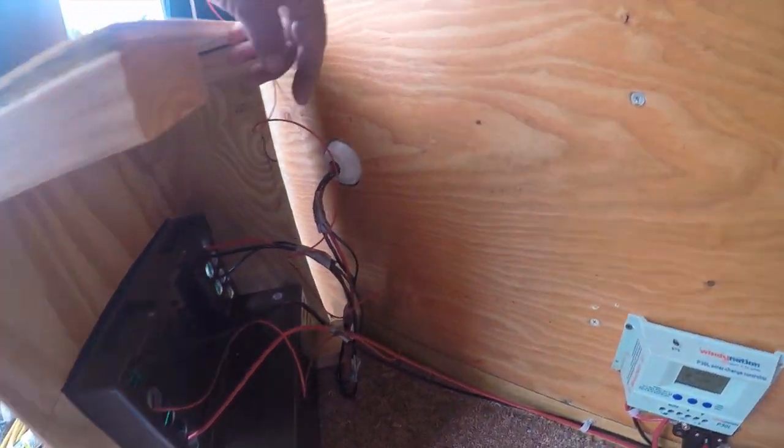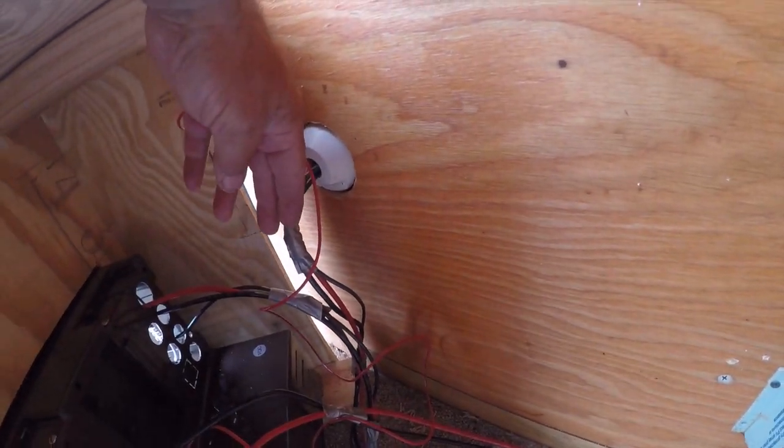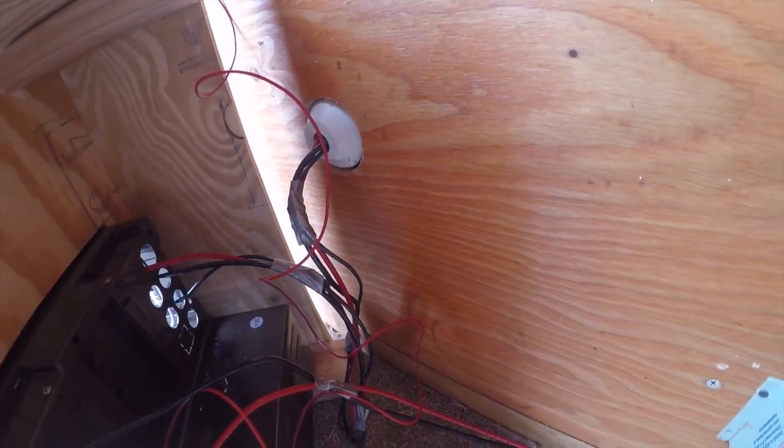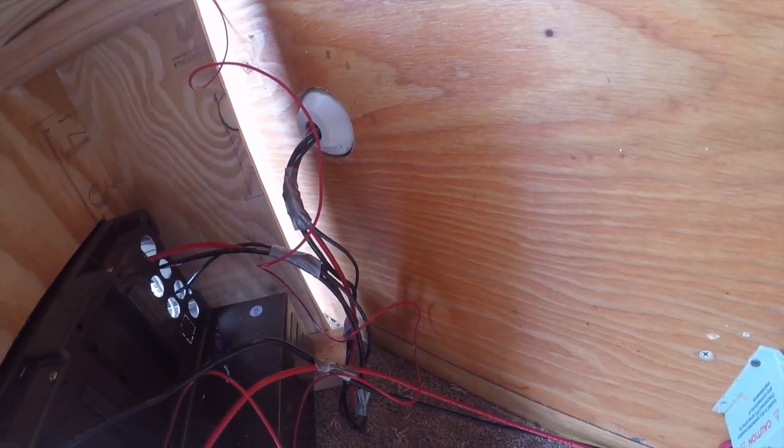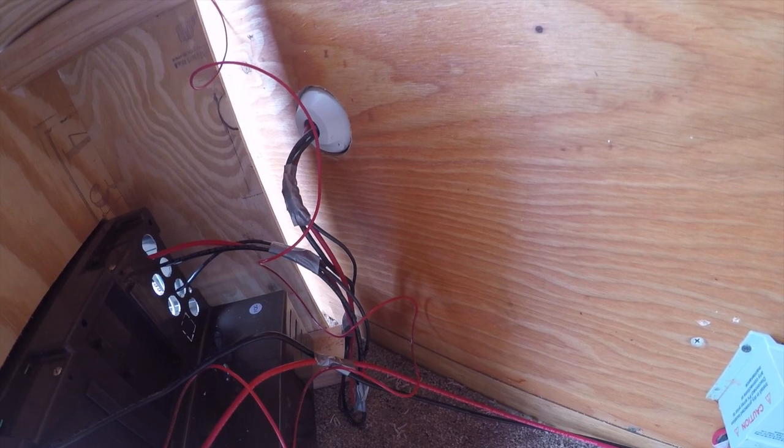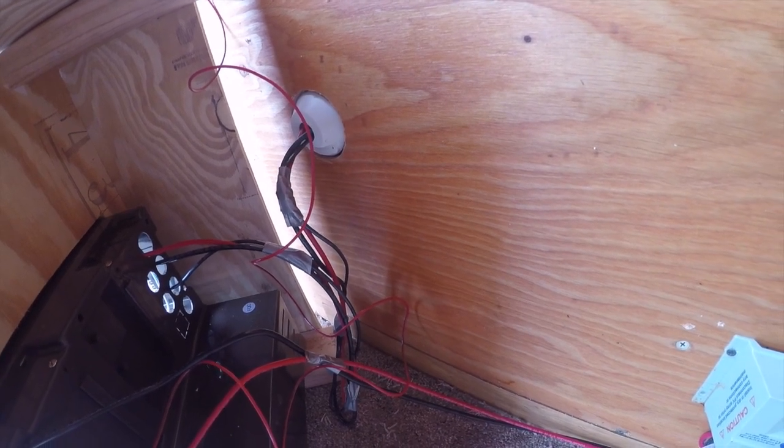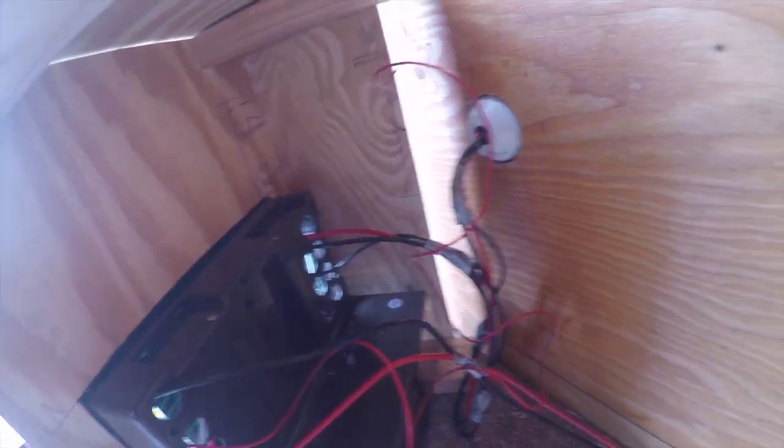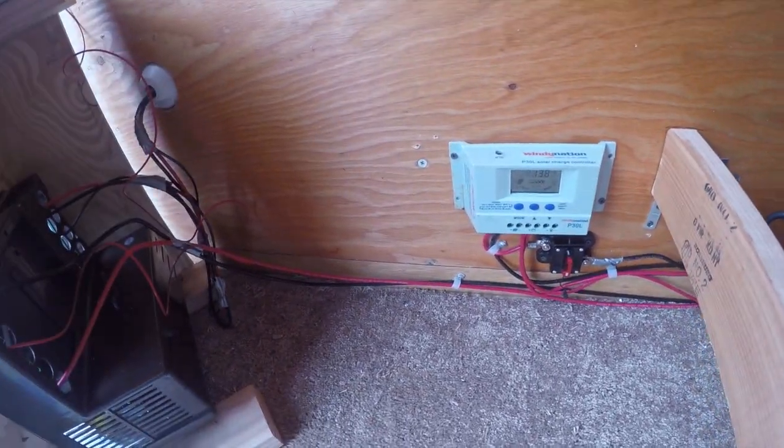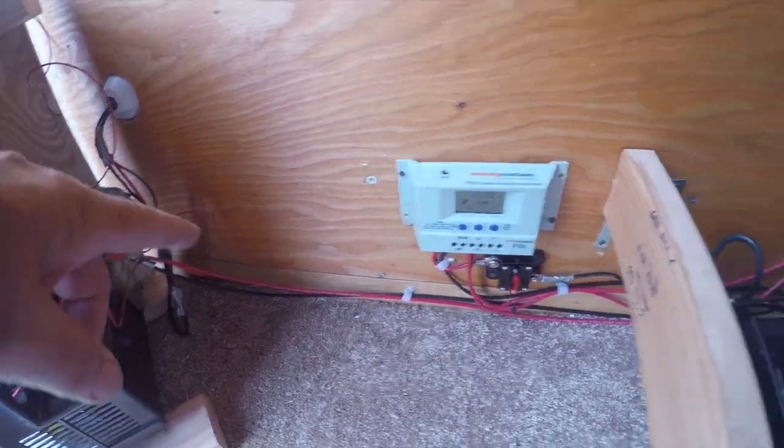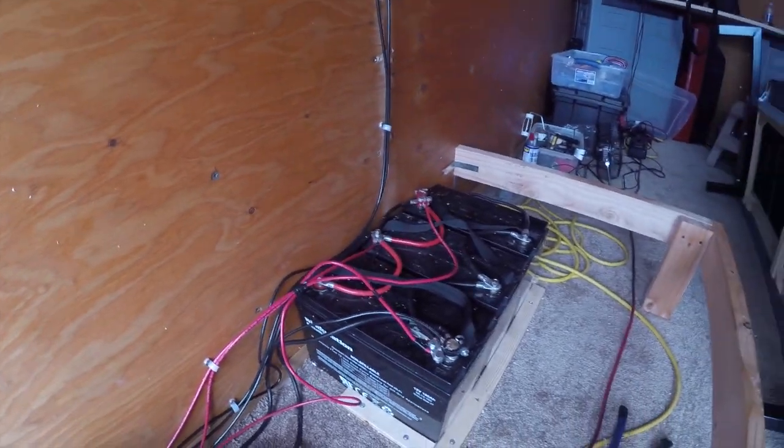That duct tape on there, it's temporary. I zip tie all this. I just put the duct tape on there just to hold it in place until I'm all done, in case I gotta change anything. I'm not cutting a bunch of zip ties off. And I put the bends in the wire so it'll pull in and out, then I run it over to the batteries.